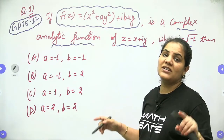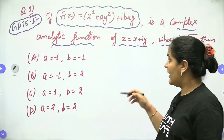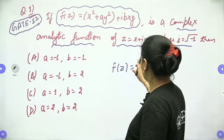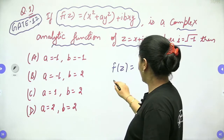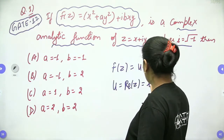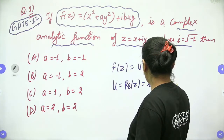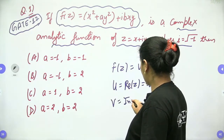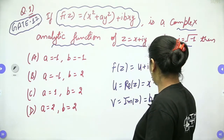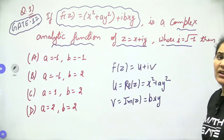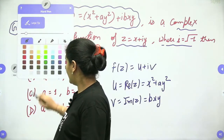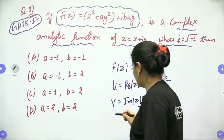It's already given in the question that the given function is an analytical function. We have the complete function f(z) equals u + iv. From here we have the real part u equals x² + ay², and the imaginary part v equals bxy. So we have both real and imaginary parts. Any function is said to be analytic if it satisfies the Cauchy-Riemann equation.